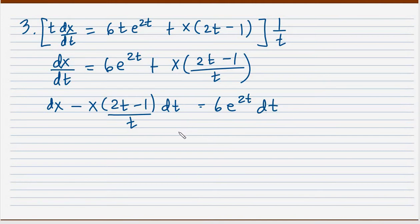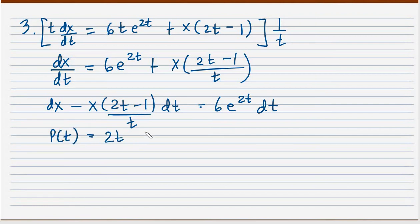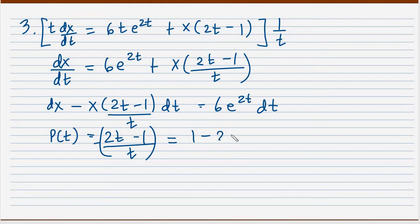What I now have is a linear differential equation with x as its dependent variable — linear in x. So our P(t) is equal to (2t minus 1) all over t. Let's not forget the negative sign there, so with the negative distributed, this will be (1 minus 2t) all over t.